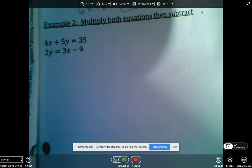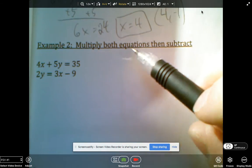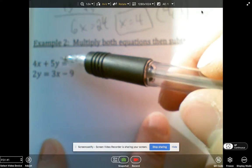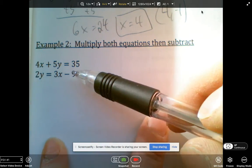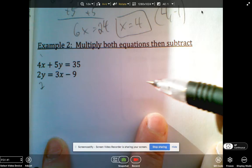So this time, both equations, it says multiply both equations and then subtract. So first of all, which one needs to be changed into standard form? Yeah, the second one.